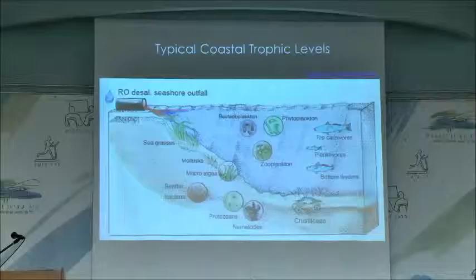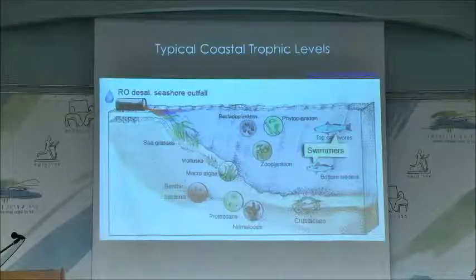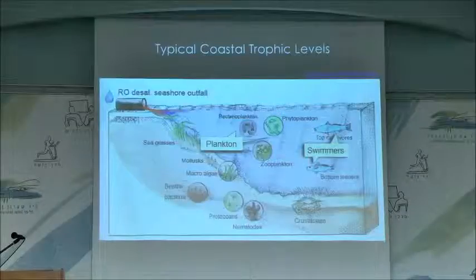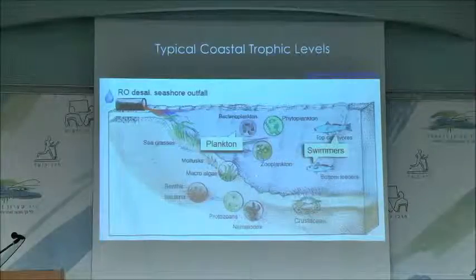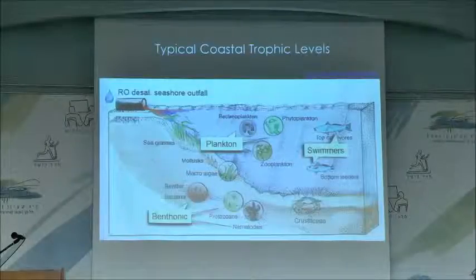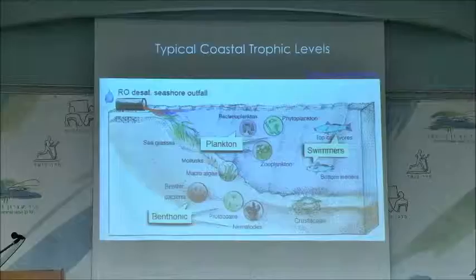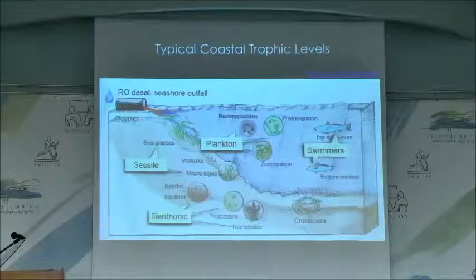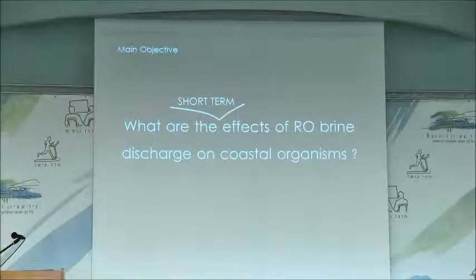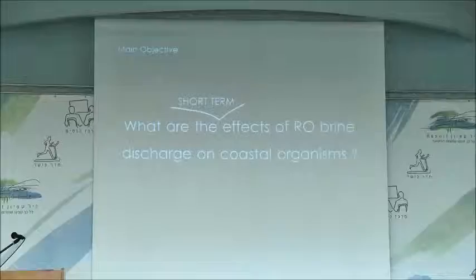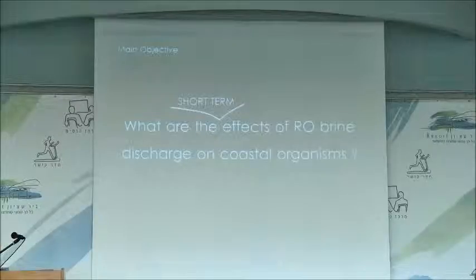When looking at the trophic level, you can define it in various ways. For this brief overview, I will talk about fish — the swimmers — and plankton, moving with the current. I will highlight phytoplankton and picoplankton; I won't talk on zooplankton. I will also highlight some benthic fauna, benthic bacteria, and macrofauna. And lastly, seagrass and microalgae. My main objective is to show you the short-term effects of RO brine discharge on coastal organisms.